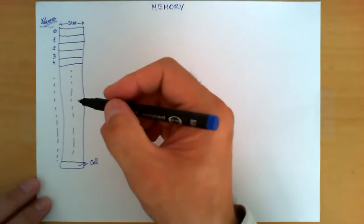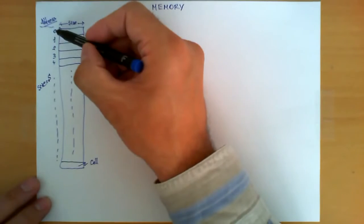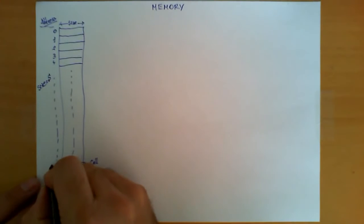How many of these we have is actually the size. If we have size equal s, this memory has s cells. Clearly the first one will be number zero, and the last will be s minus one.